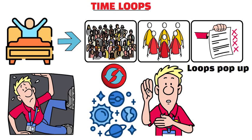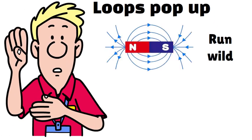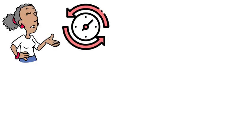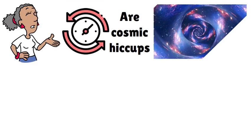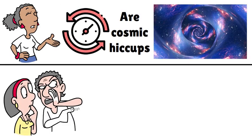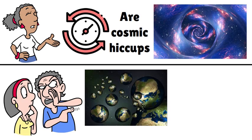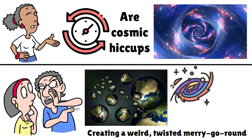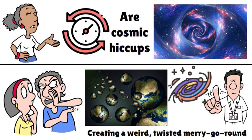Some folks swear these loops pop up where electromagnetic fields run wild or where emotions hang heavy, like ghosts refusing to leave. Some say time loops are cosmic hiccups, glitches in the space-time continuum. Others whisper about parallel realities bleeding into our own, creating a weird, twisted merry-go-round. It's like your life got caught in a cosmic blender, and not the good kind.